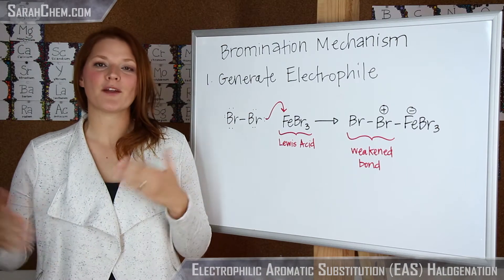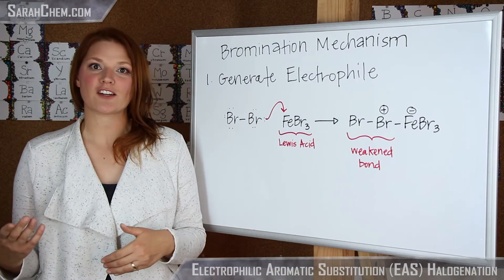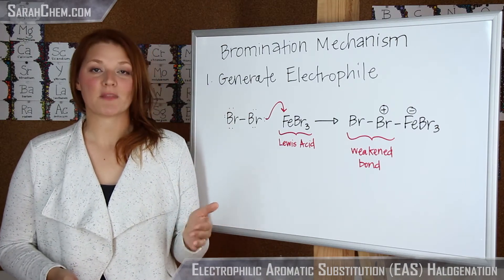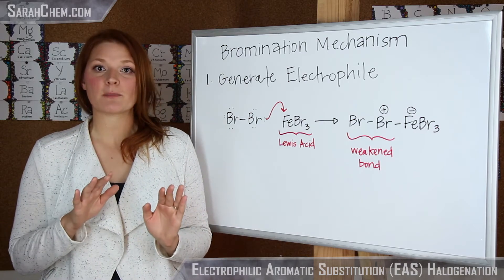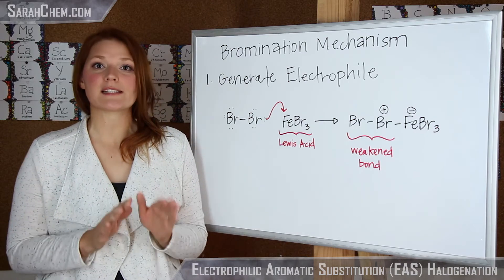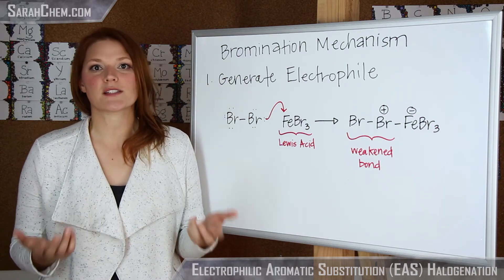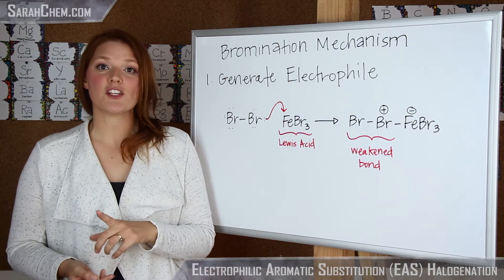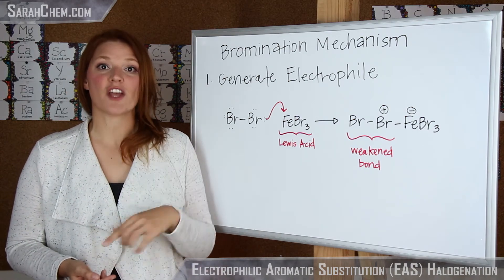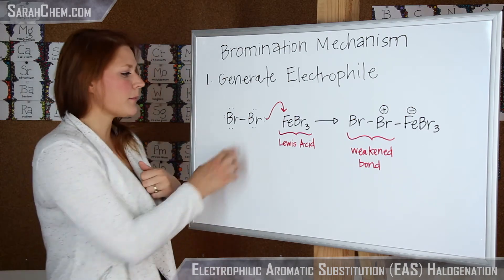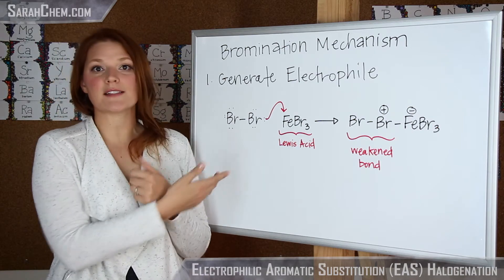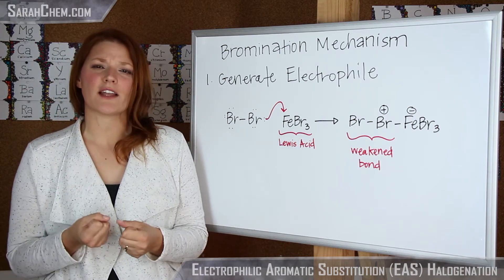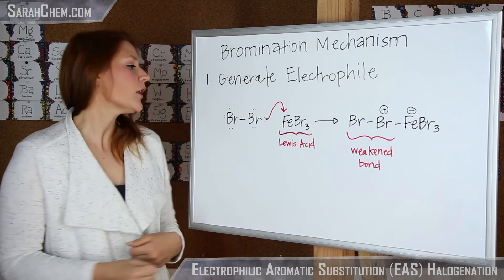So now what we're going to do to help understand how this reaction happens is to take a look at the bromination mechanism. The bromination and chlorination mechanisms are really similar, and I'll point out areas where you would see a difference. In both cases, the first thing you have to do is generate your electrophile, because Br2 — or Cl2 as well — isn't a strong enough electrophile to get the reaction going.